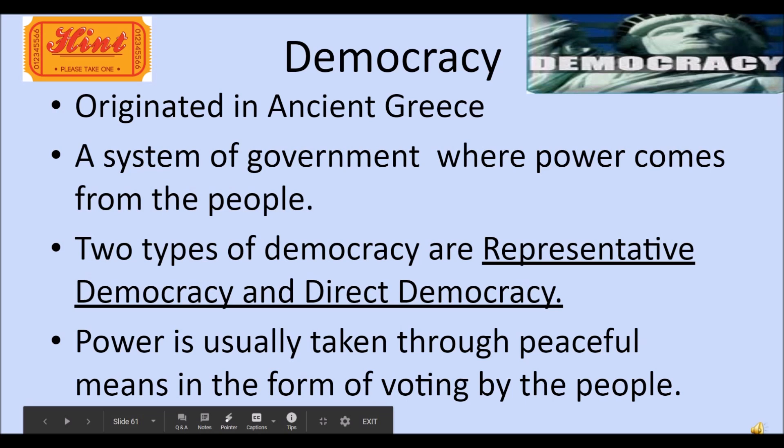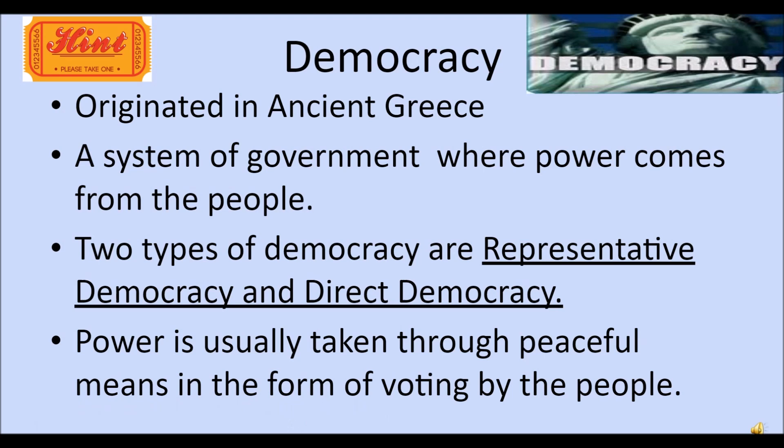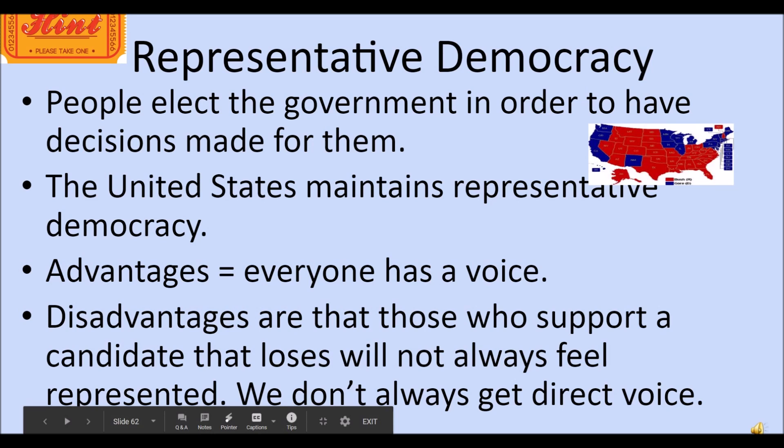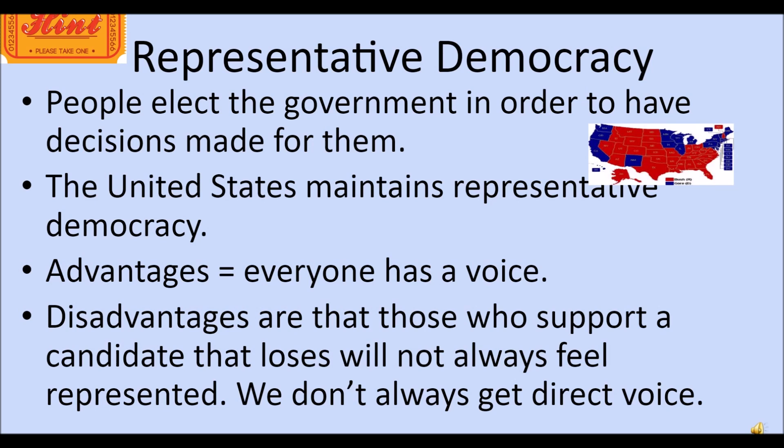Democracy originated in ancient Greece — a system of government where power comes from the people. There are two types. Representative democracy, that's what we have: you have reps in the state, senators responsible for making laws that are supposed to look out for you. Power is usually transferred through peaceful means by voting. Representative democracies like ours have elections where we send representatives to the capital to legislate, create laws, and check some balance on the president. The advantage is that everyone has a voice. The disadvantage is that some people don't think elections matter, or those whose candidate loses can feel disconnected from the government and it can be divisive.